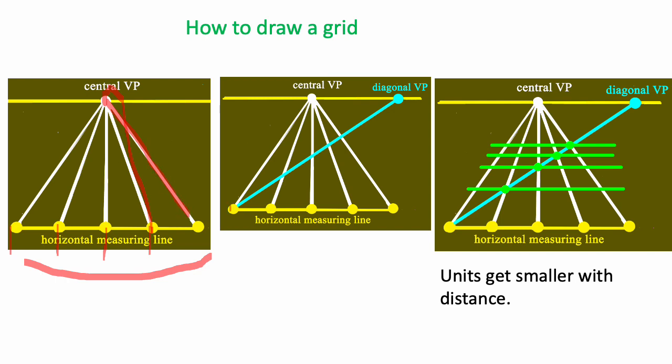Then draw a diagonal from one end of the horizontal measuring line across it to the other end up here. And where this line crosses the white lines at these spots, you draw the horizontal green lines to finish your grid. And notice that the units in front get smaller as they go toward the distance.